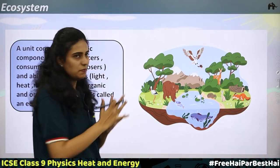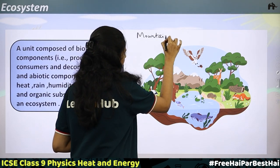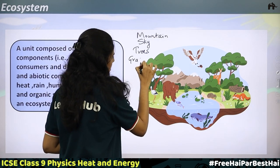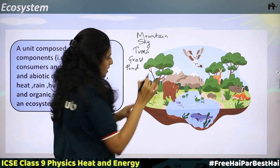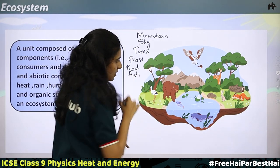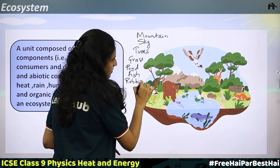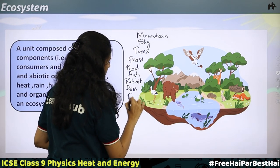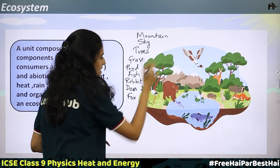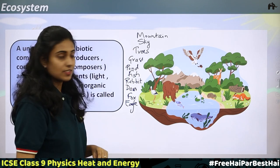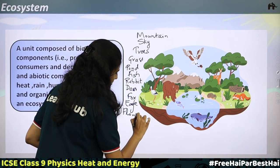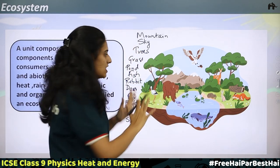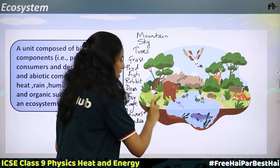Just look at this picture. What all can you see? You can see a mountain, sky, trees, grass, a small pond, a fish, a rabbit, a deer, a fox, an eagle, flowers, and snakes. So you can see that all of these are existing in the same system — in this space, all of them are existing.